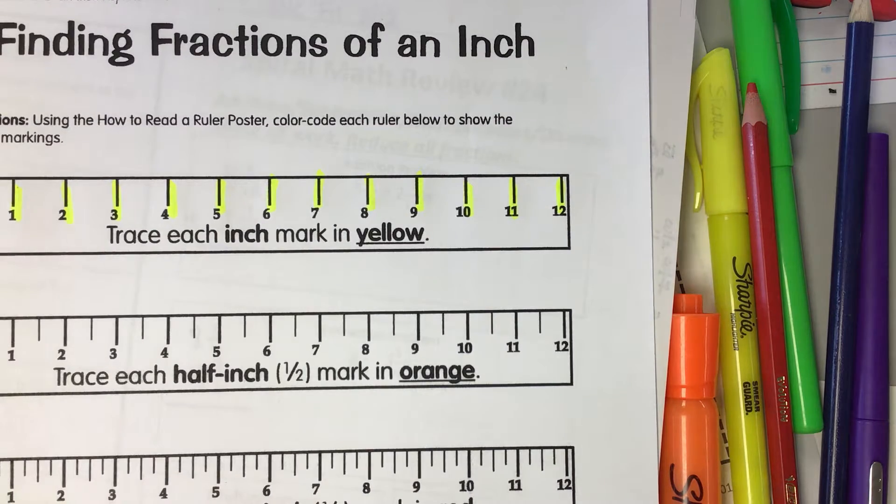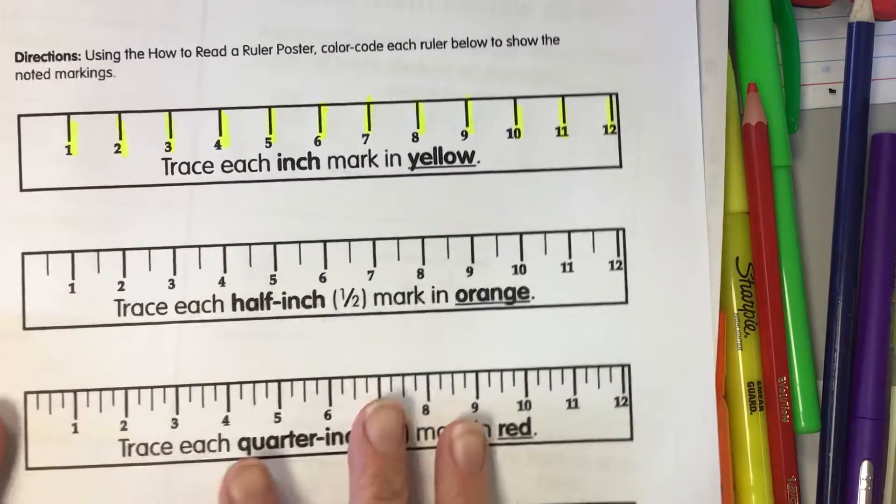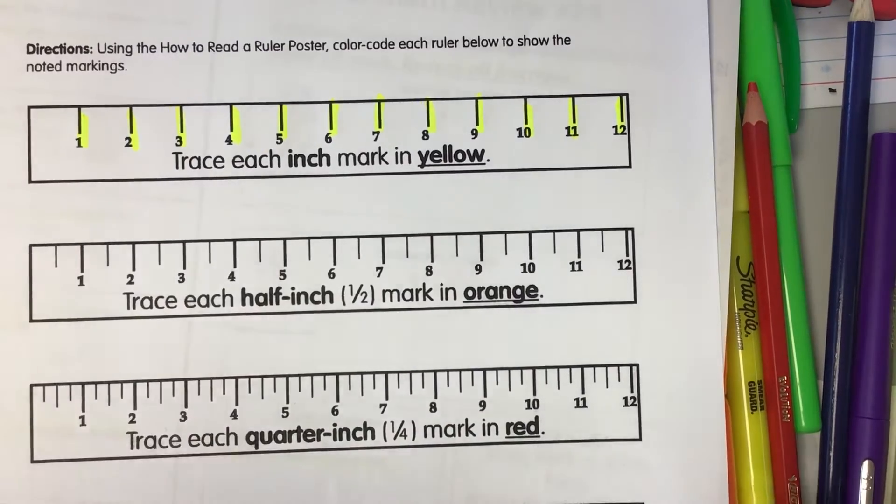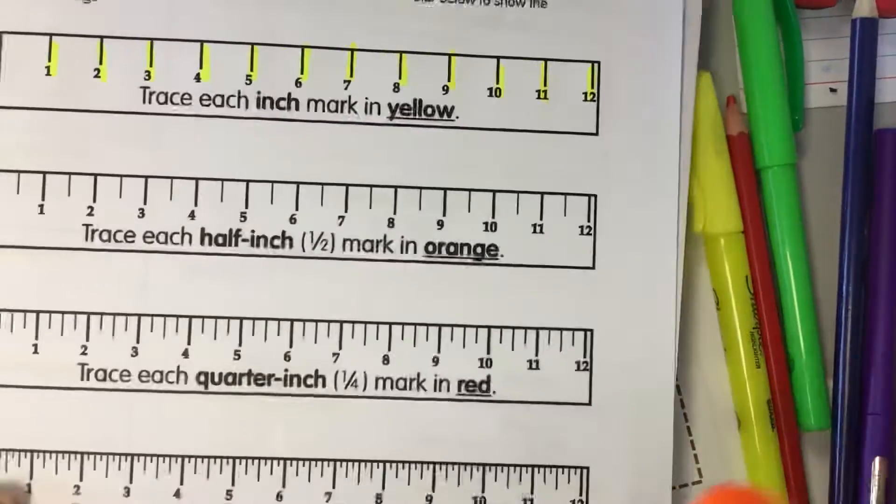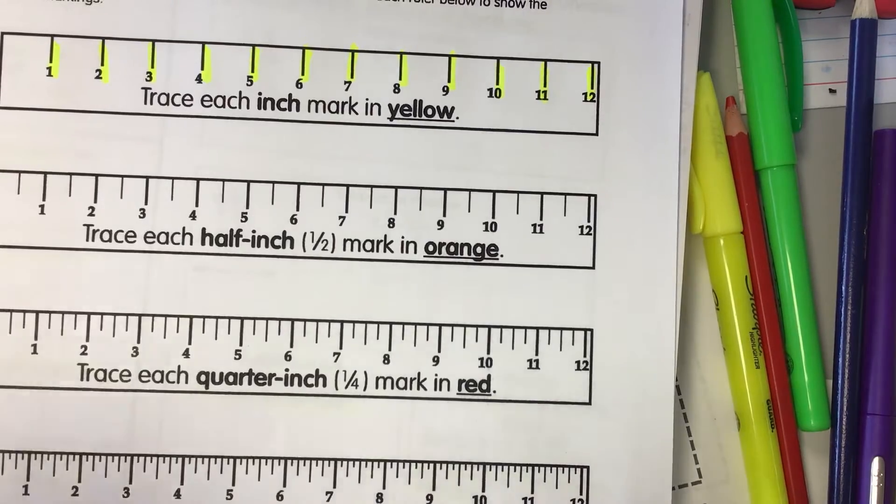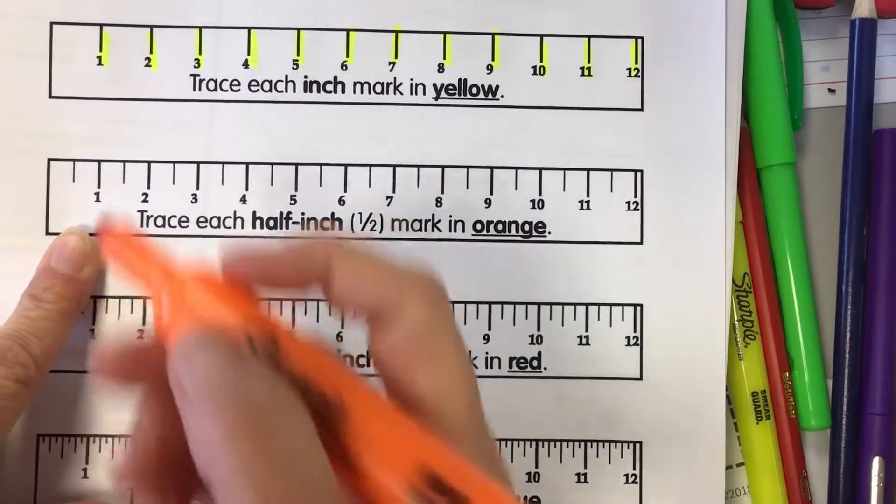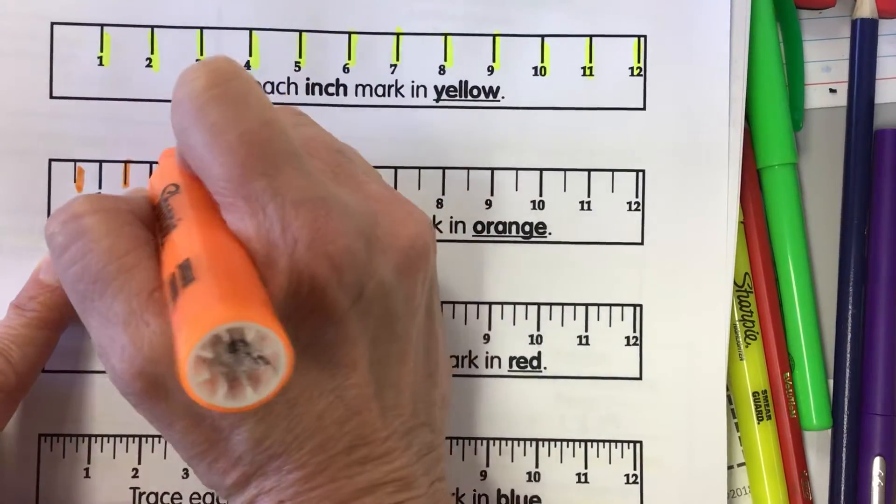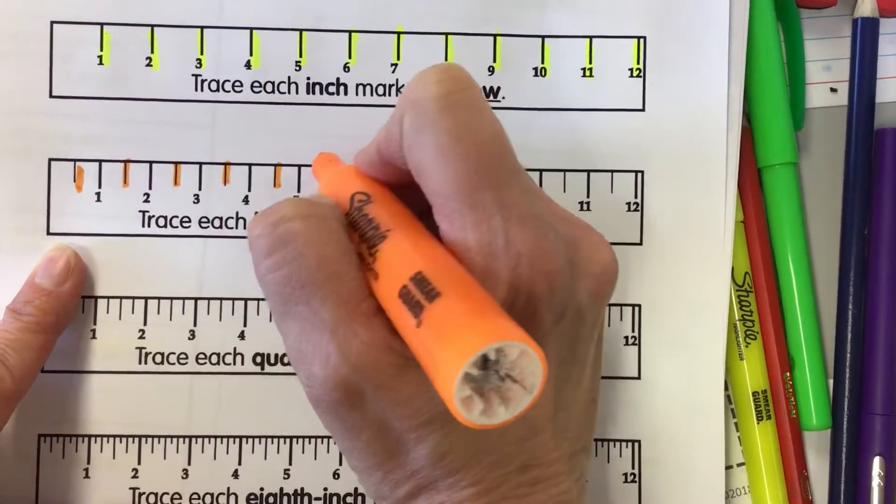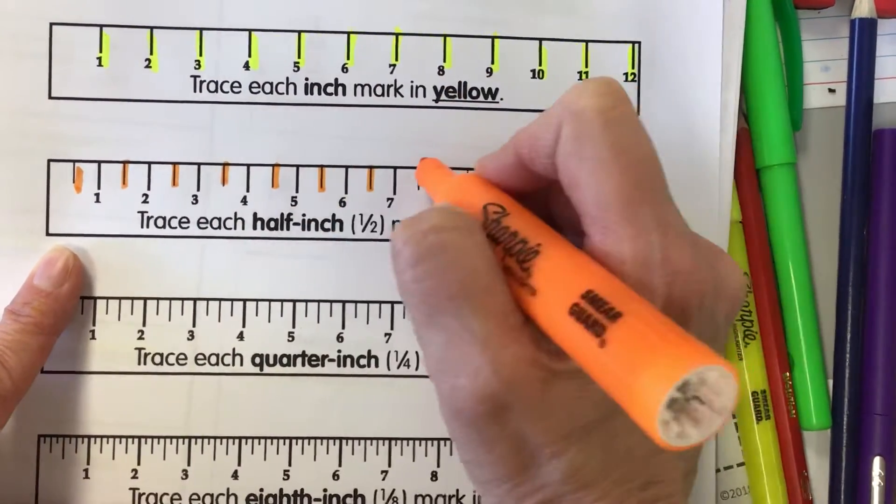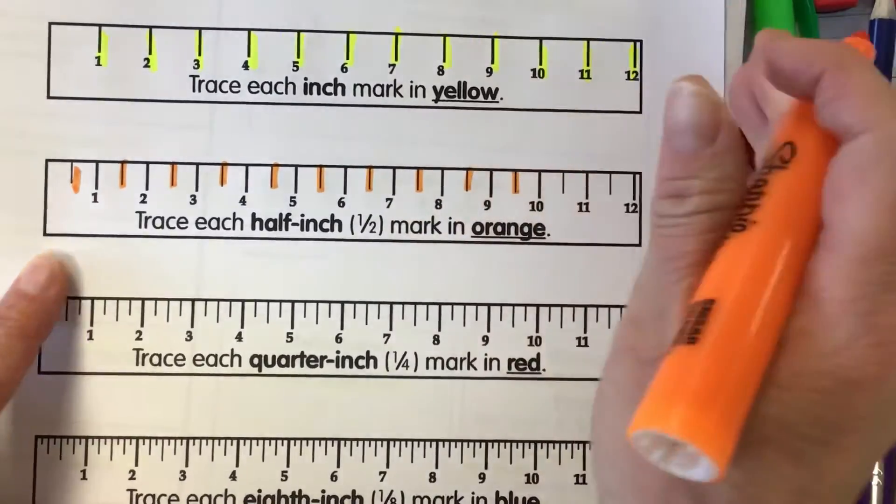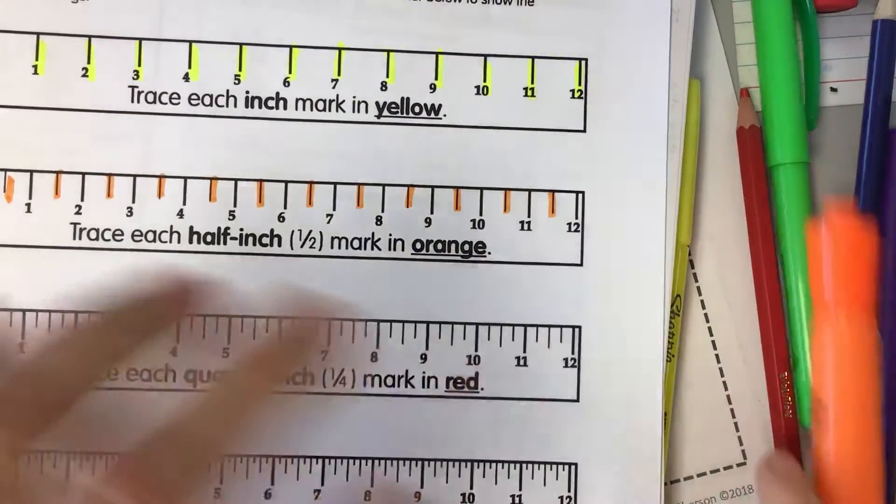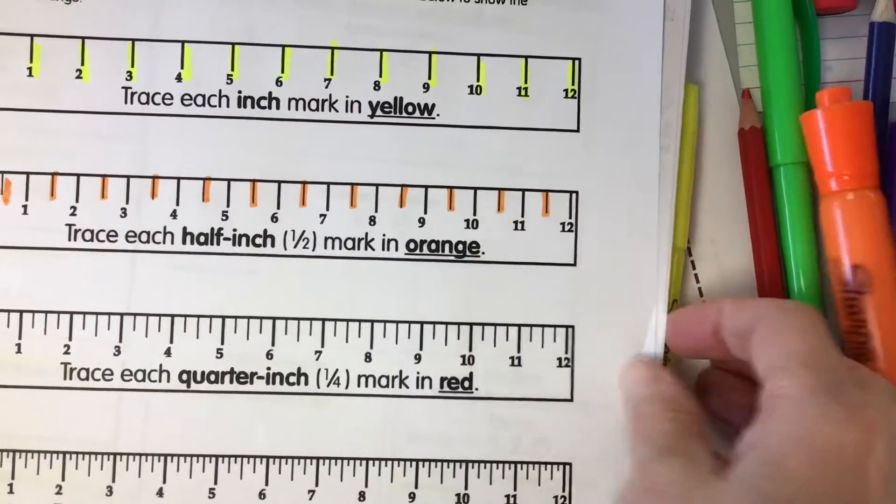Okay, so on this ruler what they've done is they've cut each inch in half or divided it into two equal parts. So we are going to take an orange and we're going to trace each of the half inch marks in orange, and then we're going to go back and we're going to trace each of our one inch marks in yellow.